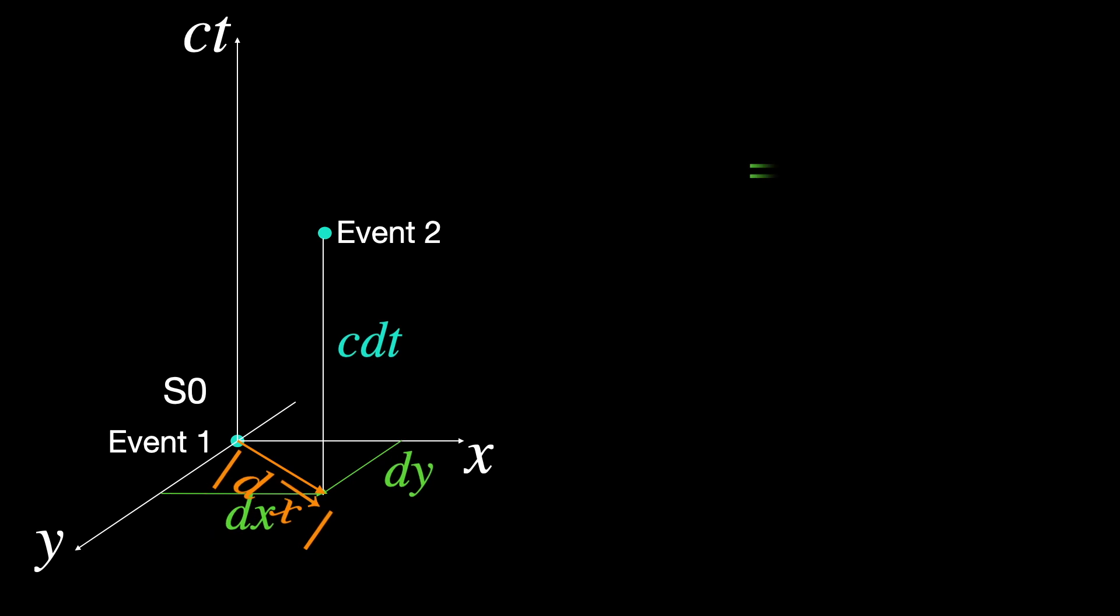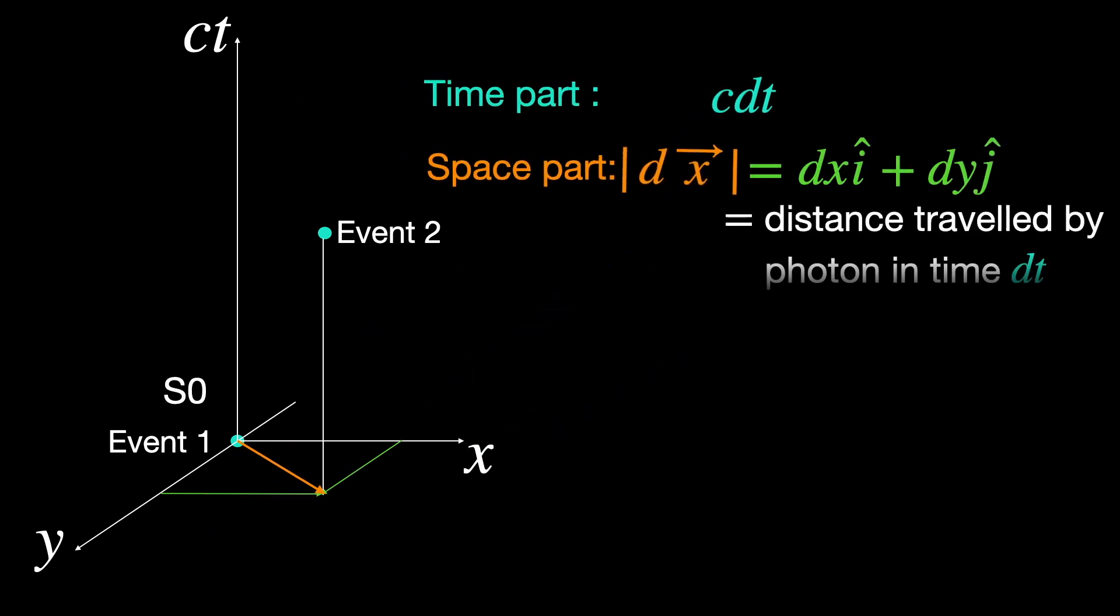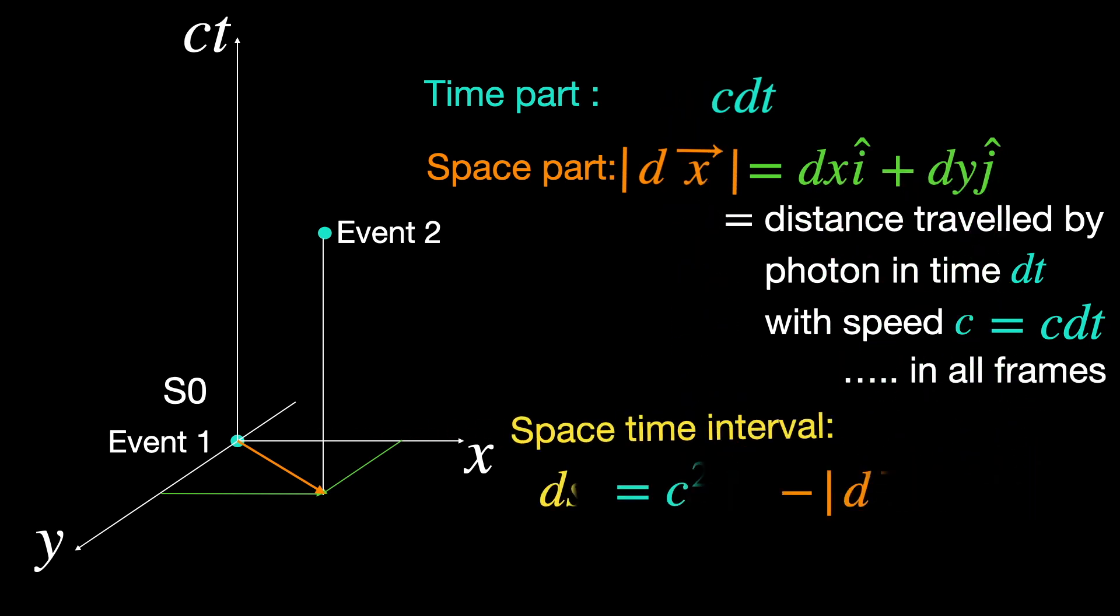But we are here to talk about the lightlike spacetime interval. These are of course intervals between events that occur on the trajectory or world lines of a light particle or photon. So, such intervals are always along the light cones. For observers, like ourselves in S0 frame and S1 frame and S2 frame, any frame, lightlike intervals are always a combination of space and time parts. And by the second postulate of special relativity, they exactly cancel each other in all frames making them null spacetime intervals.